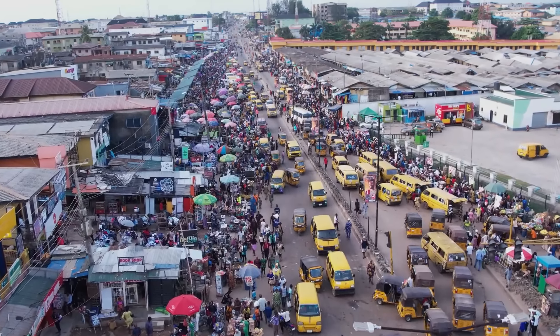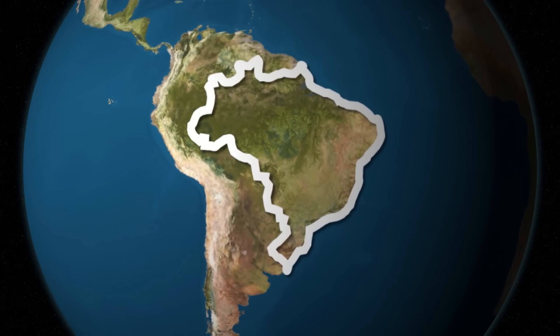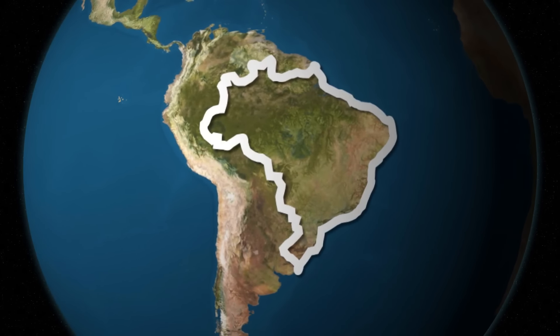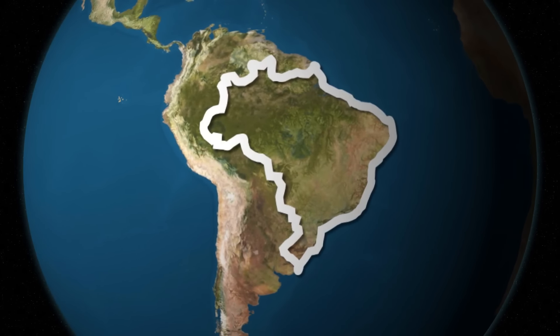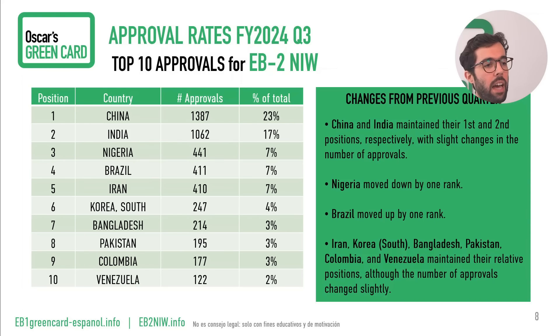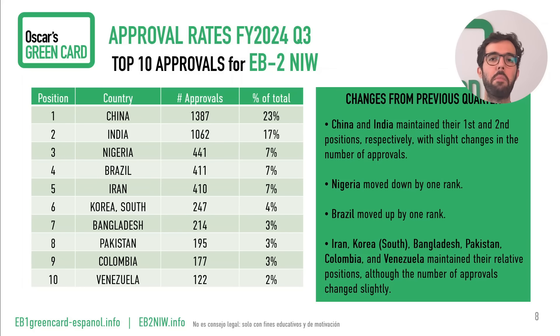The largest change in NIW approvals between quarter two and three was for Brazil. The number of approvals for Brazil decreased by 391 cases, dropping from 802 approvals in quarter two to 411 in quarter three. Despite this significant reduction, Brazil actually moved up in the rankings from fourth to third position. Other countries like Iran, South Korea, Bangladesh, Pakistan, Colombia, and Venezuela maintained their relative positions, although the number of approvals changed slightly — usually losing numbers.